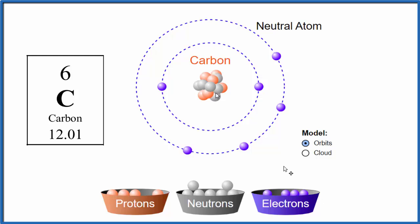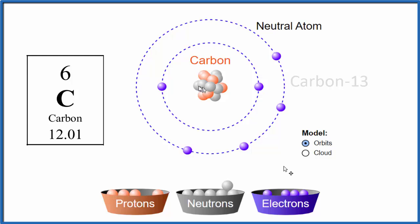With isotopes, some carbon atoms have more than 6 neutrons. Some have 7 — the protons, atomic number, and electrons remain the same, but with one more neutron the mass number changes. 6 protons plus 7 neutrons gives a mass number of 13 — we call this carbon-13. About 1% of carbon is this isotope. There's an even smaller amount with 8 neutrons: 8 plus 6 gives a mass number of 14 — called carbon-14. It's an isotope of carbon as well.